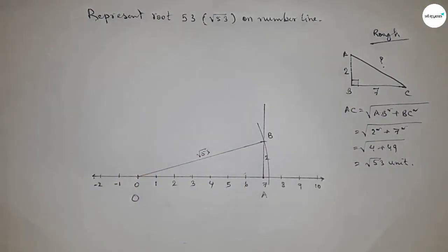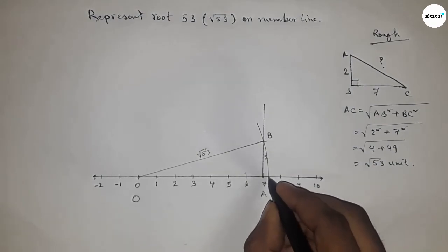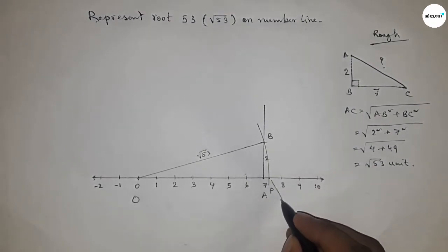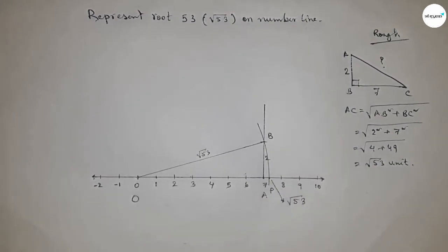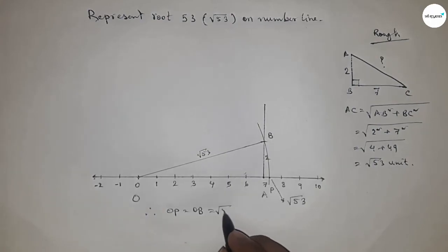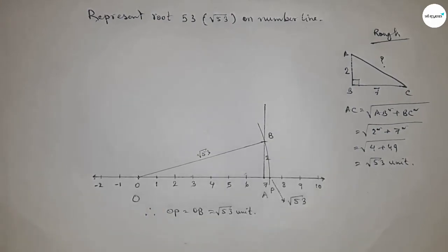And drawing arc which made the number line at a point P. And this is the representation of root 53 on number line. So therefore distance OB and OP are equal. So OP equal to root 53 unit.